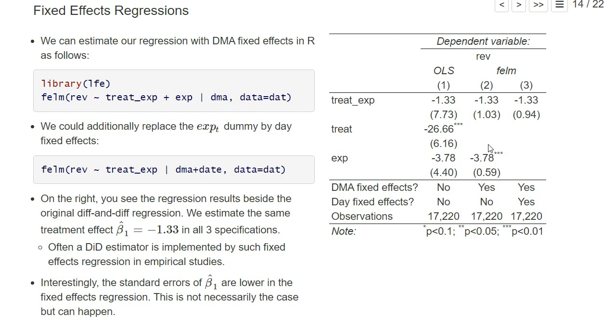Intuitively, it controls also for this confounder that the DMAs are not randomly distributed between treatment and control group. We indeed find if we include the DMA fixed effects but not the treatment group dummy, that we have exactly the same estimated coefficient here of our causal effect of the treatment of turning off search engine marketing.